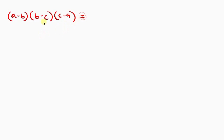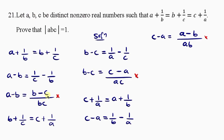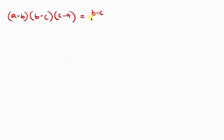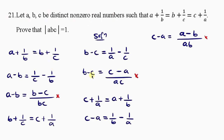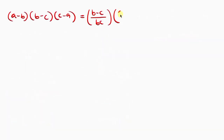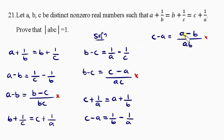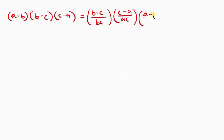So this product equals the right-hand sides multiplied together. A minus B equals B minus C over BC, so we write B minus C over BC. B minus C equals C minus A over AC, so we write C minus A over AC. And C minus A equals A minus B over AB, so we write A minus B over AB.